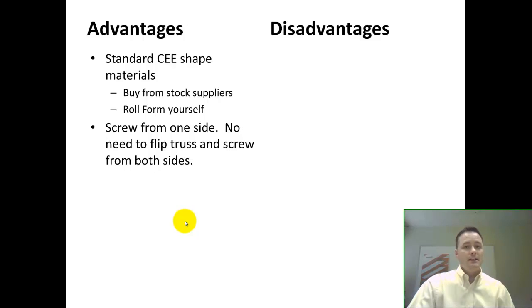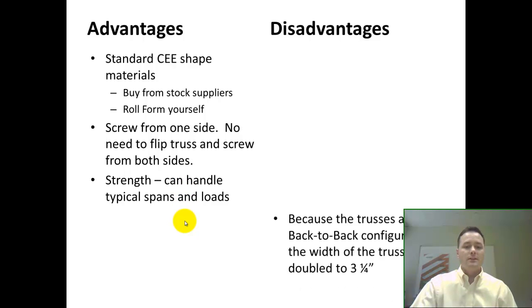Also, back-to-back C trusses only need to be screwed from one side, so you don't have to flip the truss and screw it from both sides. They're pretty strong and they can handle typical spans and loads.